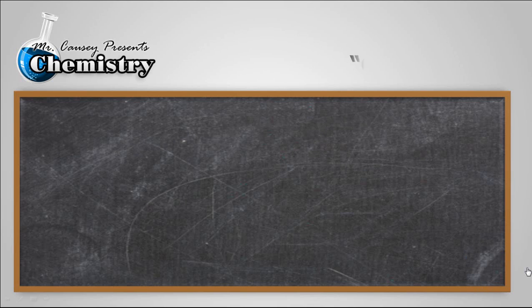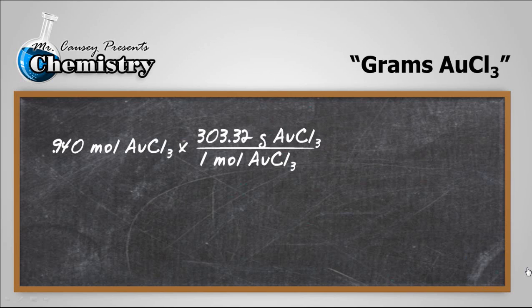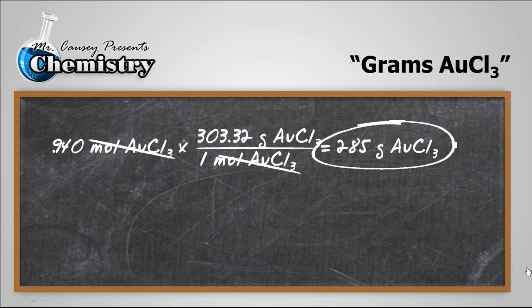Now, we're going to calculate the grams of gold 3-chloride. Take 0.940 moles of gold 3-chloride, multiply it to the molar mass that we had calculated earlier, cross out the moles, plug and chug by multiplying 0.940 by 303.32 grams, and we get 285 grams of AuCl₃.